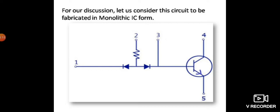Here you can see the circuit which I considered in my previous lecture, to be fabricated in monolithic IC form. Monolithic means the whole circuit will be fabricated on a single wafer, or it is better to say on a single substrate. In this case, we have taken a silicon wafer as the substrate. The circuit consists of an NPN transistor, two PN junction diodes, and a resistor. There are five terminals, meaning five pins will be coming out from the IC after fabrication.